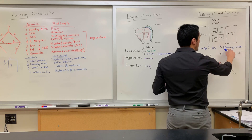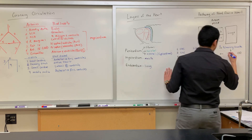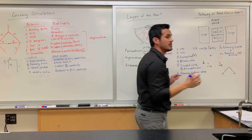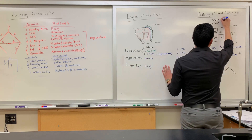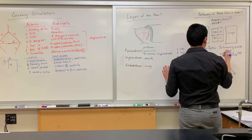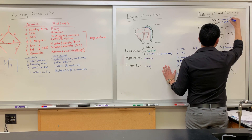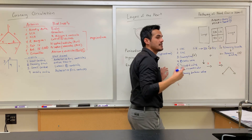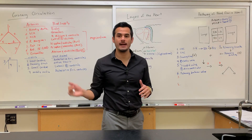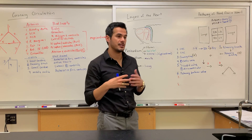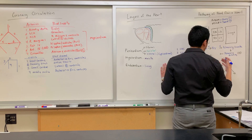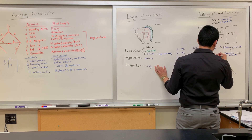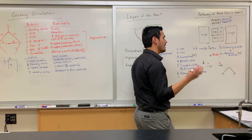From the pulmonary trunk, blood moves into the pulmonary arteries — there are two of them. Arteries go away from the heart and veins go toward the heart. From the pulmonary arteries, blood enters the lungs, where gas exchange occurs: we exhale CO2 and inhale oxygen. This gas exchange occurs at the capillary bed known as the alveoli, where the blood is oxygenated.